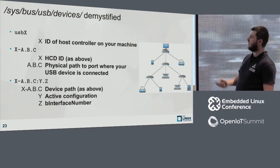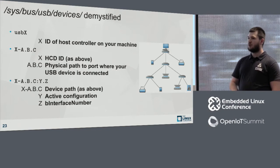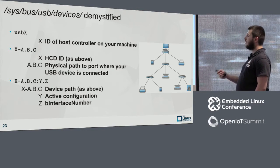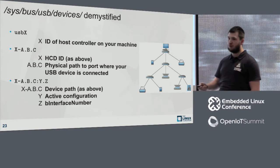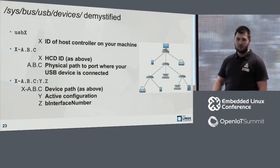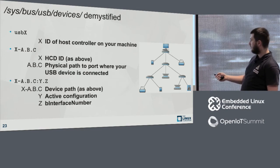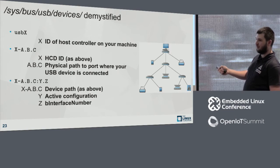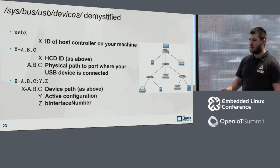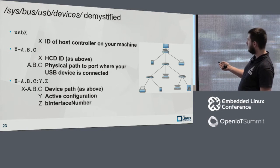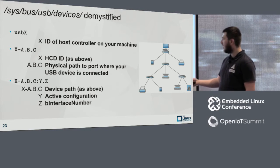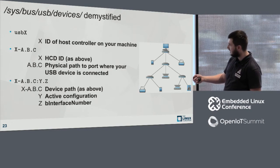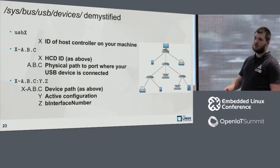Device directory names follow a pattern: X is the host controller number, followed by the physical path through hubs to the port. For example, a printer on port 3 of the root hub, port 2 of the next hub, port 3 of the last hub would be named '3-2.3'. Interface directories start with the USB device identity followed by the configuration number and interface index within that configuration.